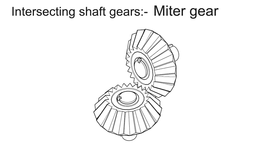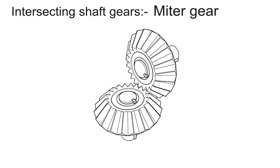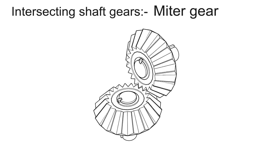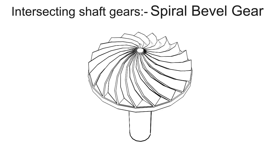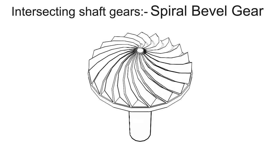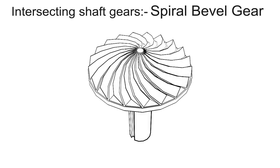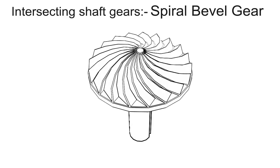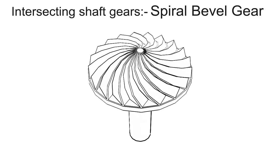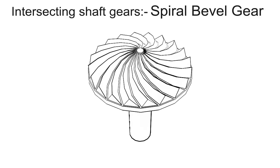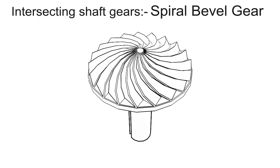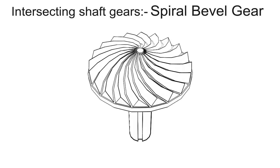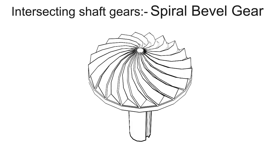Gears of the same size connecting two shafts at right angles to each other are known as miter gears. Spiral bevel gear — when the teeth of a bevel gear are inclined at an angle to the face of the bevel, they are known as spiral bevel gears or helical bevels. They are smoother in action and quieter than straight tooth bevels, as there is gradual load application and low impact stresses. They are used in the differential of an automobile.